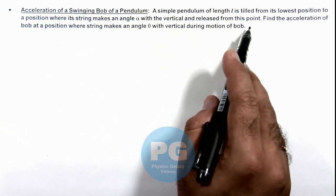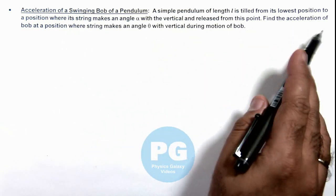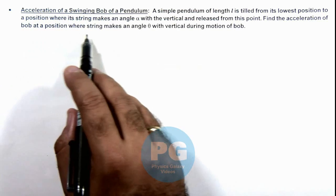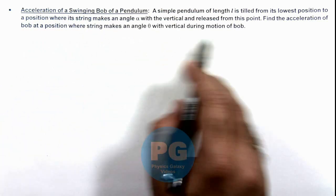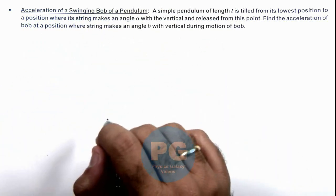And it is released from this point. We are required to find the acceleration of the bob at a position where the string makes an angle theta with the vertical during motion of this bob.